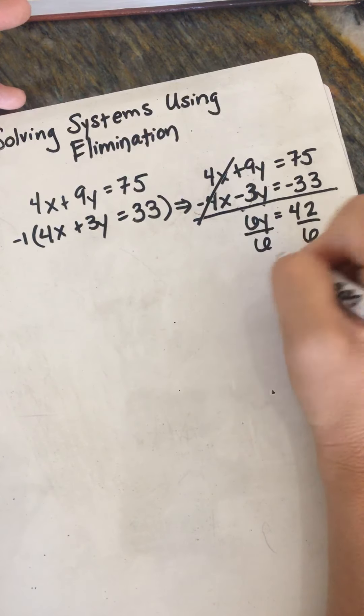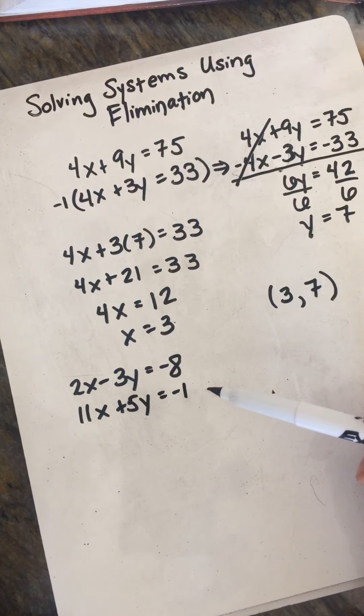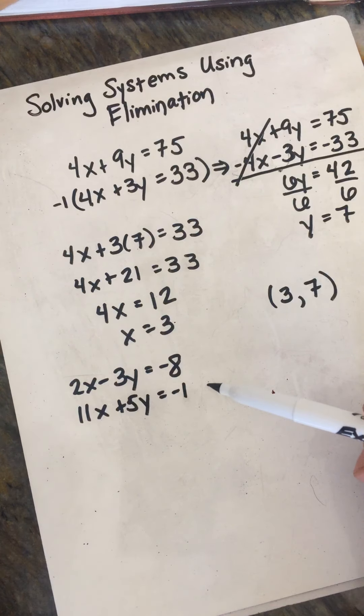There are some more challenging elimination problems. So let's say we have 2x minus 3y equals negative 8 and 11x plus 5y equals negative 1. And you notice that nothing matches. None of the x or y terms will eliminate out easily. So this is where we're going to need to do some multiplication of both equations.